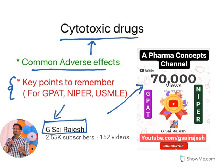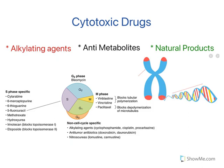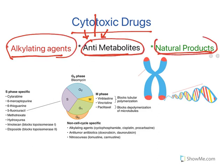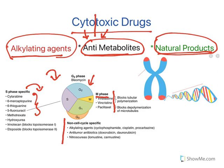There are three classes of cytotoxic drugs: alkylating agents, anti-metabolites, and natural products. As the name indicates, these drugs are toxic to cells. Not all cancer drugs are cytotoxic drugs — these three classes are known as cytotoxic drugs because they cause cytotoxicity. When you see the cell cycle, anti-metabolites are S-phase specific, bleomycin is G2-phase specific, and plant products are M-phase specific. Alkylating agents, antibiotics, and nitrosoureas are non-cell-cycle specific.